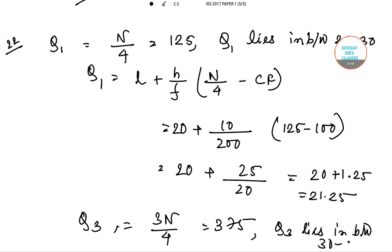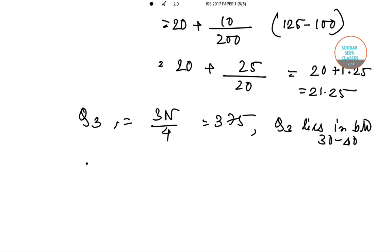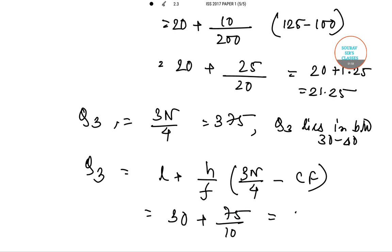So we can say that Q₃ will be L plus h/f multiplied by 3N/4 minus CF, that gives us 30 plus 75/10, equals 37.5.